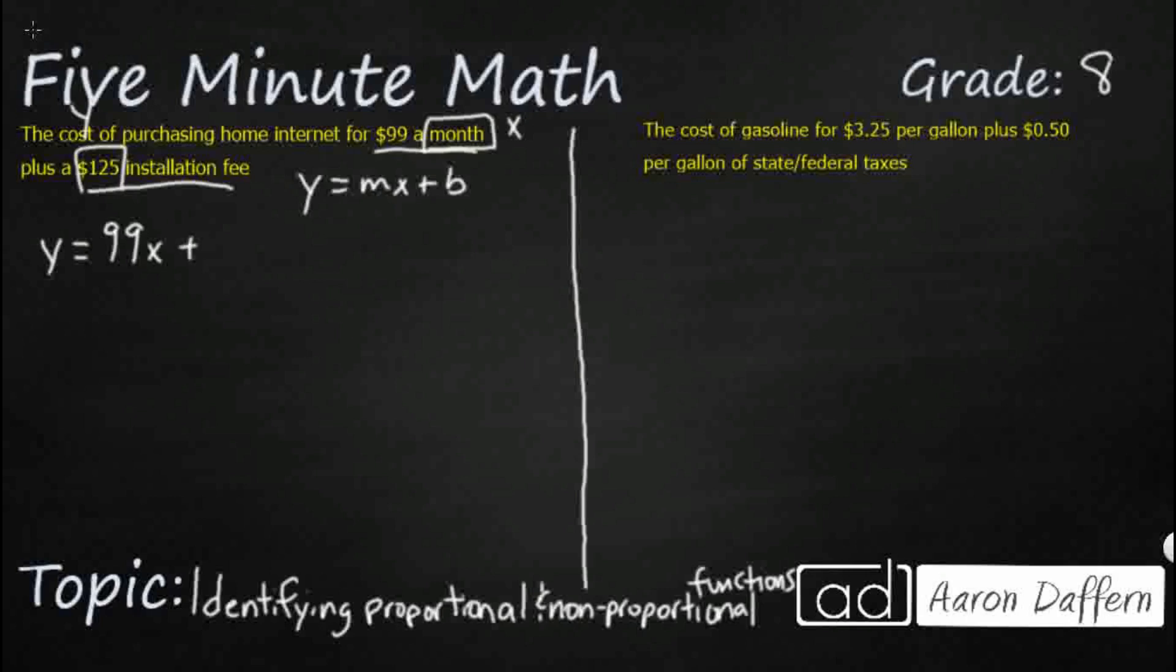It's positive. It's our y-intercept, our b. It's $125. So you start with just $125, and then you do $99 a month,